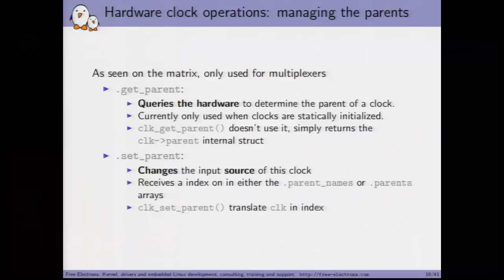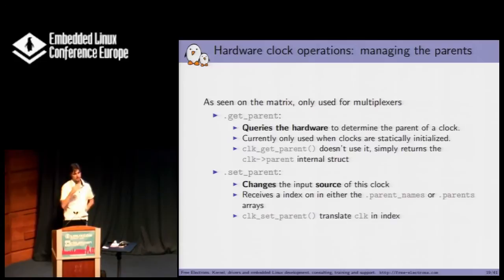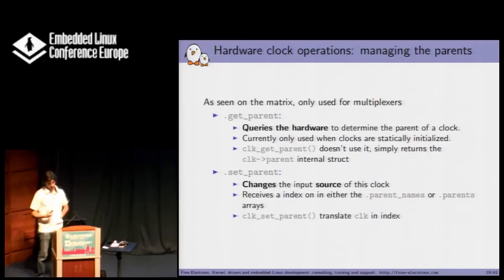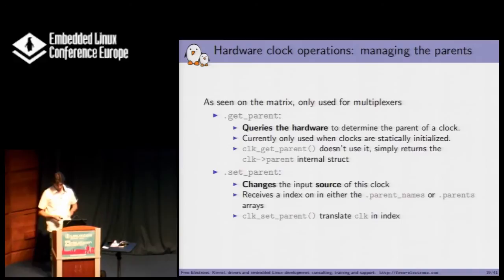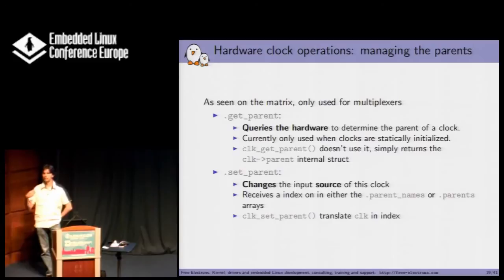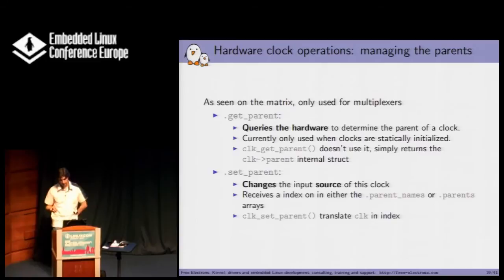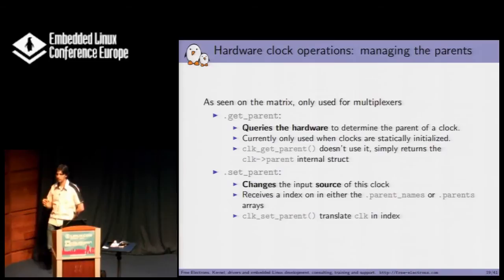There are functions used by multiplexer clocks — clocks from which you can select one input or another in the tree. get_parent reads from the hardware which is the parent clock of your current clock, and is only used when clocks are statically initialized at the beginning of the framework. After that, when a driver calls clk_get_parent, it won't read the hardware — it just gets information from the clock framework. set_parent changes the input source of this clock.